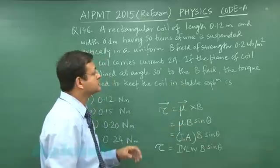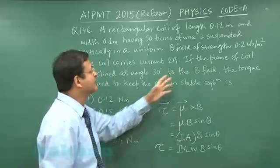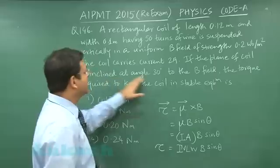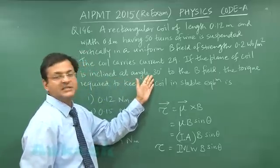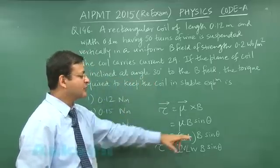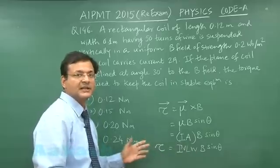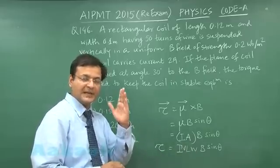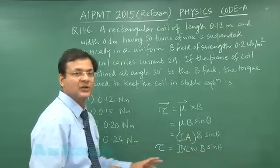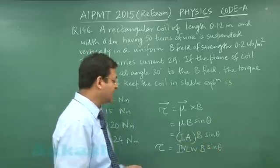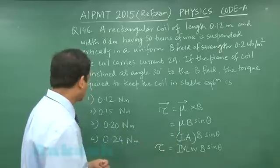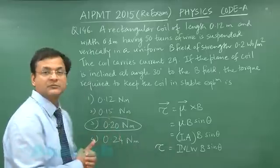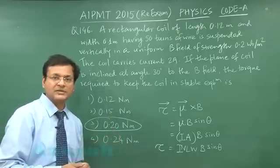The strength of the magnetic field is given as 0.2 T, and the current is 2 amperes. The plane of the coil is inclined at 30° with the magnetic field; however, the angle to substitute is 60°, because we calculate the angle between the perpendicular to the plane and the magnetic field. Substituting θ = 60°, the torque comes out to 0.2 Newton meter — the correct answer to question 146.